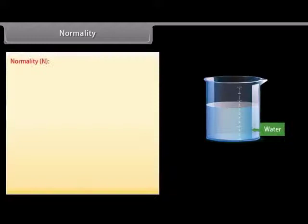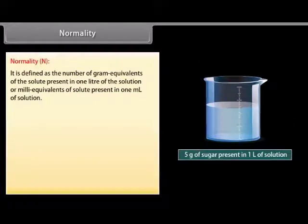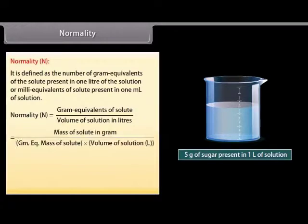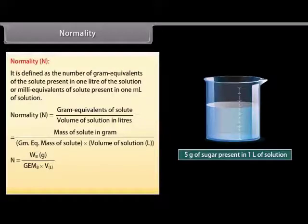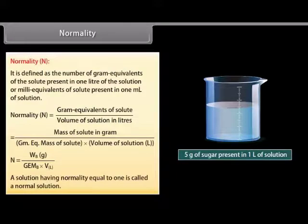Normality is defined as the number of gram equivalents of the solute present in 1 liter of the solution, or milliequivalents of solute present in 1 milliliter of solution. It is represented by N. Mathematically, normality N is equal to W_B in grams divided by the product of gram equivalent mass of B and volume of solution in liter. A solution having normality equal to 1 is called a normal solution.